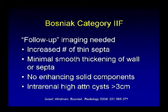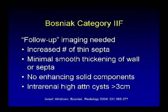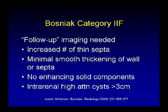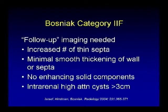Bosniak 2F lesions require follow-up imaging. They may demonstrate features such as increased number of septa, minimal smooth thickening of the wall or septa, but no enhancing solid components. For high-density cysts greater than 3 cm, they also fall under type 2F. On oral boards, if you see something that's not quite type 2, categorize it as 2F and recommend follow-up — be a safe radiologist.